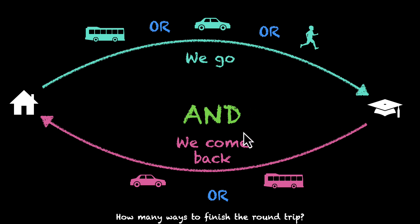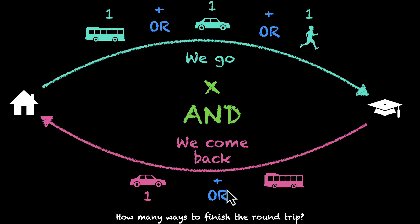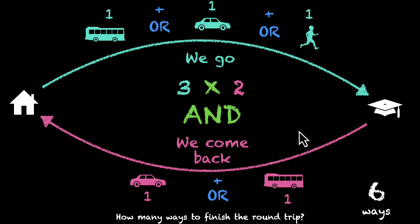The word 'and' is our second magical word. While 'or' gives us the plus sign, 'and' gives us the multiply sign. You have one plus one plus one ways to go to school, and one plus one ways to come back — that's three ways to go and two ways to come back. Because there's an 'and' here, we multiply: three times two is six. Think about the multiplication sign as multiplying the number of possibilities. If there were ten ways to go and ten ways to come back, you'd have a hundred different ways.